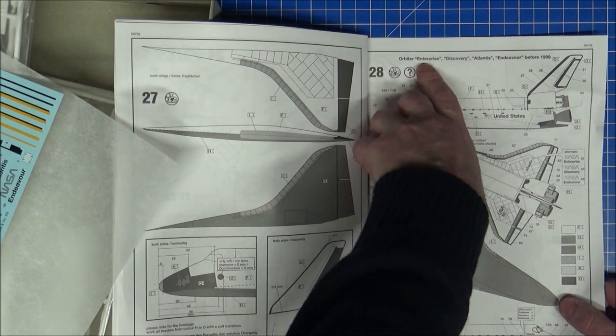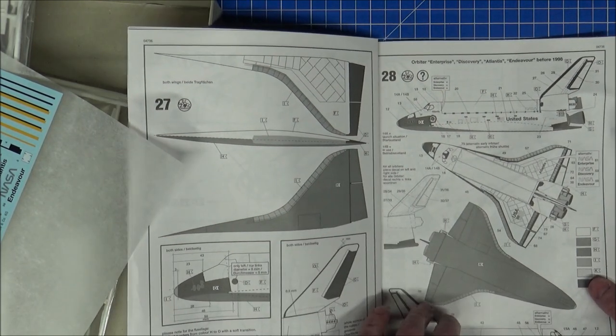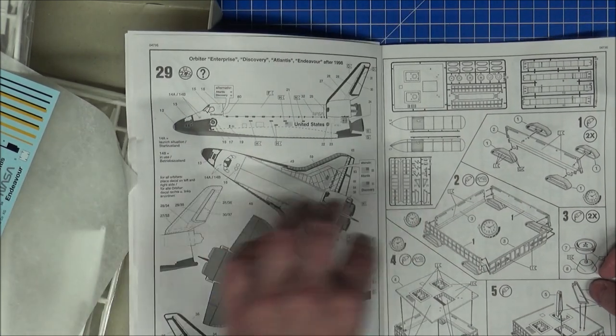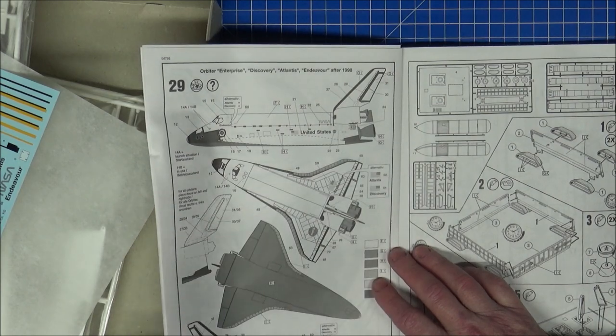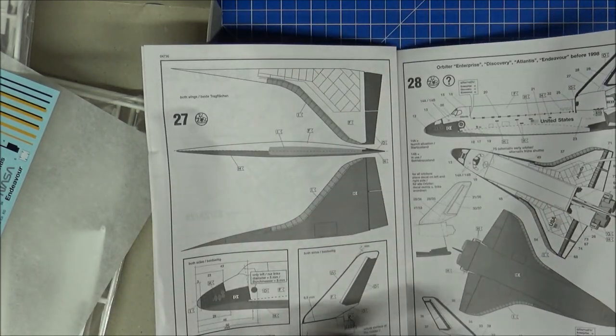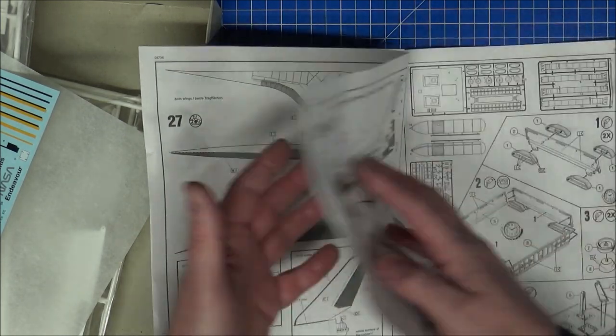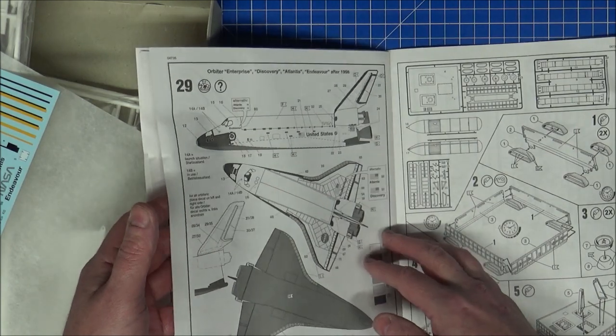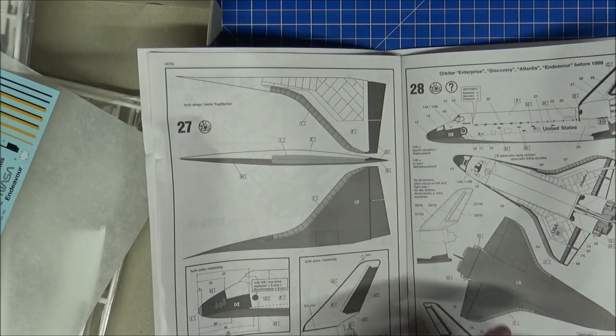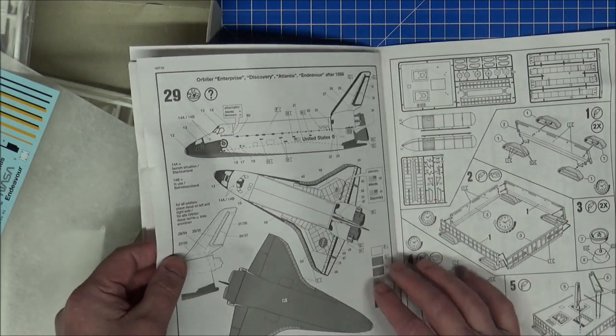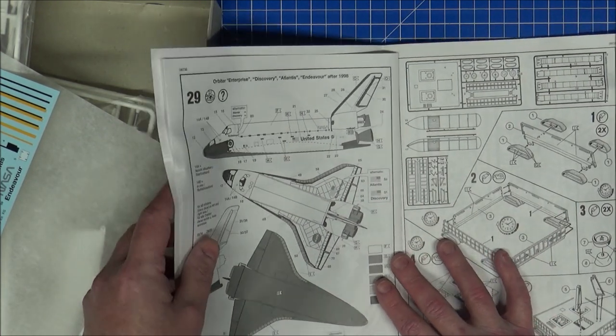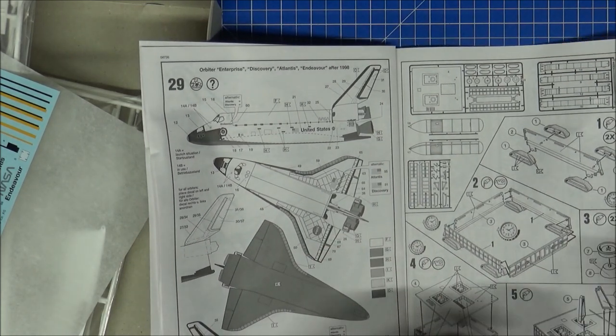Let's keep going through the instructions. We can make Enterprise, Discovery, Atlantis, Endeavor before 1998. I assume there are sticker placements after 1998. What's the difference? I can't see many differences. With Endeavor you've got the USA flag. Atlantis got the NASA flag with the USA on the opposite side.